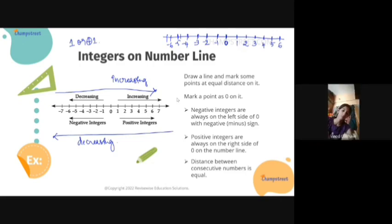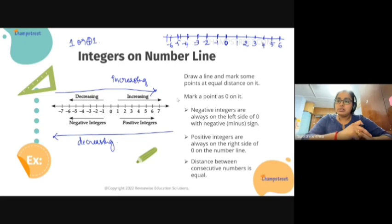Any doubts? No? Okay, so let's just read this point. Draw a line and mark some points at equal distance on it. This is the first rule. Mark the middle point as zero.